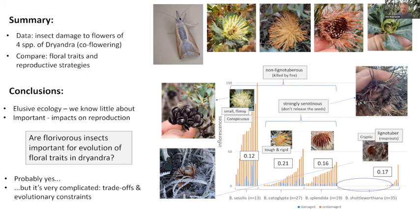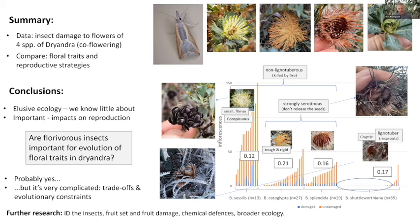For future research, next year I hope to identify the insects and add data on fruit set and fruit damage to get a full picture of the impacts insects have on reproduction of these plants. I also think it would be great to investigate the chemical defences in these species and the broader ecology of these insects — how they fit in the trophic chains. Thank you for your attention. Many thanks to my supervisors and to the Ecological Society of Australia for supporting my project.